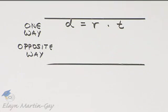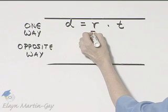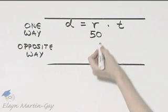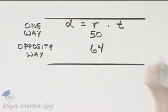Notice what we're given. We're given 50 and 64. Those are in miles per hour, so those are rates. One train is traveling at 50 miles per hour. I'll put it under R for rate. The other 64 miles per hour.